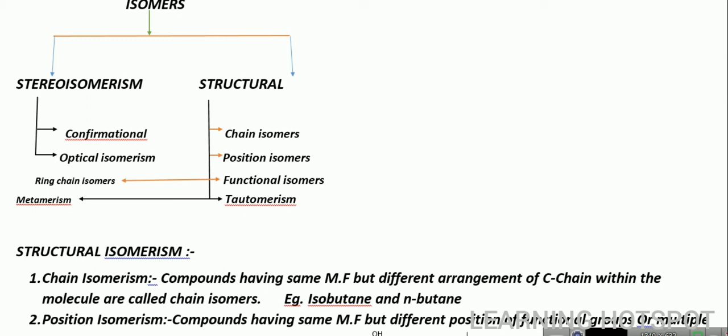Structural isomerism — what is it? The same molecular formula but different structures. They are of two types and also of six types: chain isomerism, position, functional, tautomerism, ring-chain isomers, and metamerism. We will discuss all of them one by one.